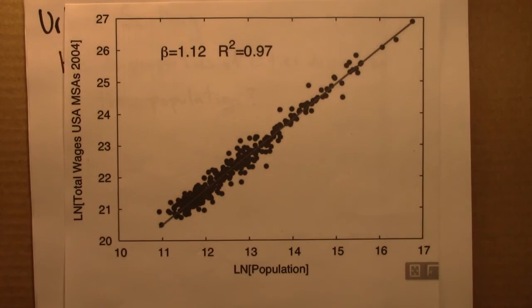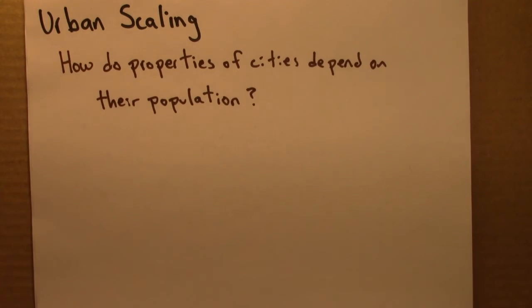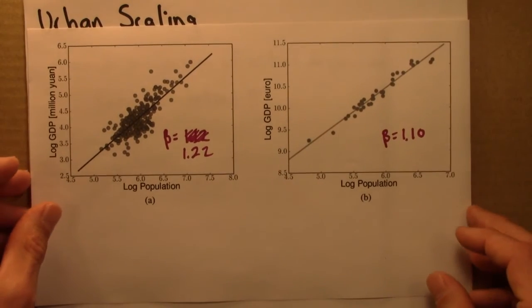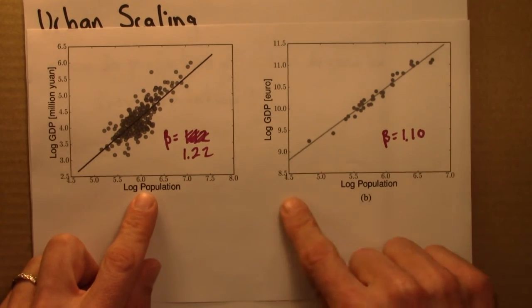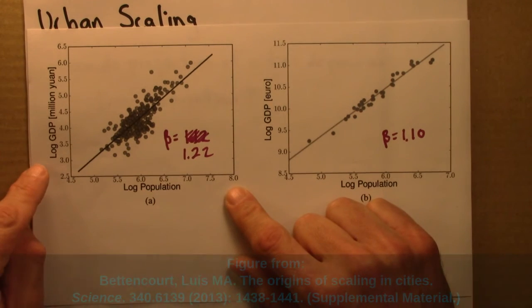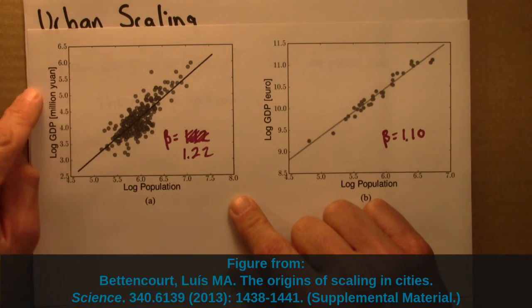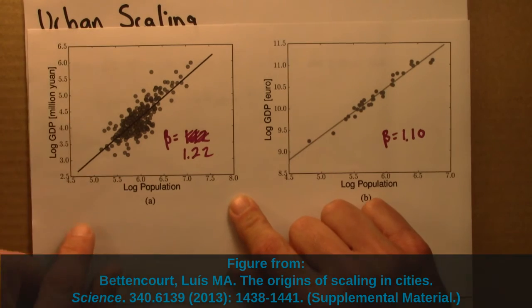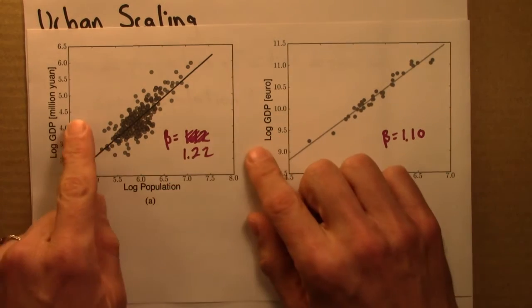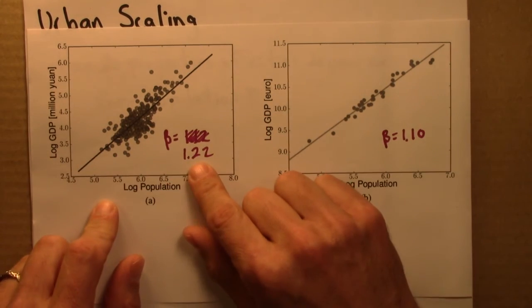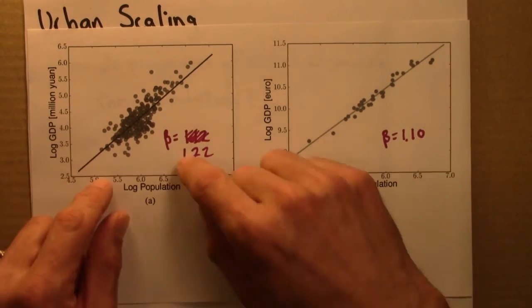Let's look at a few other results. And there are lots and lots of data sets like this, but I'll just show you a few more. Again, we have population on the horizontal axis, in a log-log scale. This is log, not of wages, but of GDP, gross domestic product, and these are for Chinese cities. So this is measured in million yuan. And again, we can see there's a very clear trend. It's certainly not a flat line. Beta is 1.12. But for this data set, there's even more variation about that trend. But again, there definitely is a trend line.